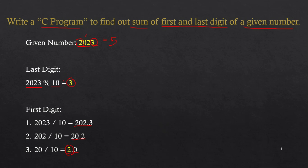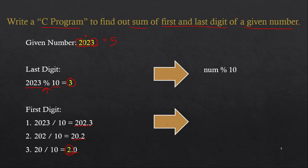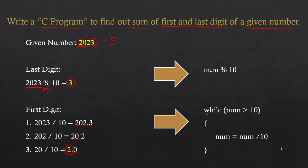Now that you know the logic, let's write the C program. For the last digit, we use the modulo operator — whatever number is given, modulo 10 gives the remainder which is the last digit. For the first digit, we divide the number by 10 in a while loop that runs as long as the number is greater than 10.